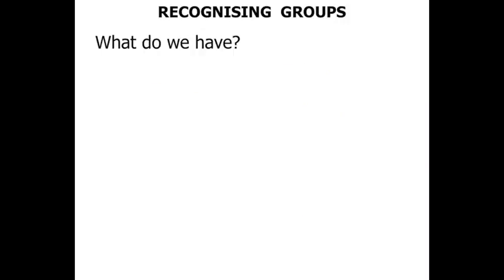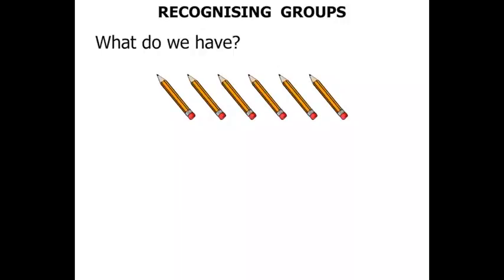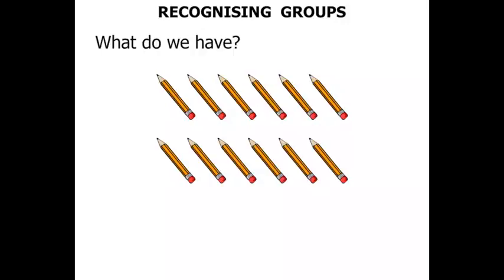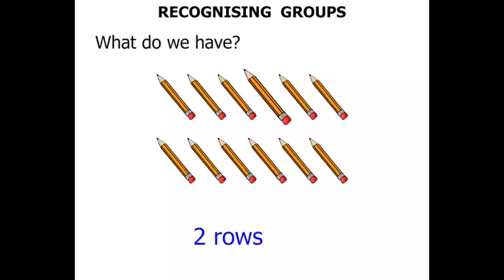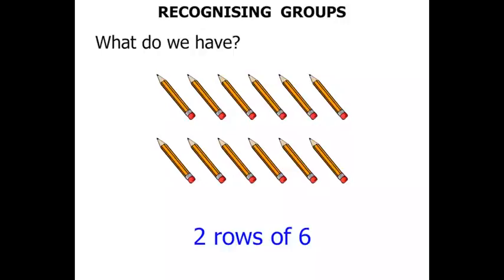What do we have? We've got some pencils there — one row. Another row of pencils, so certainly we've got two rows. But I wonder how many in each row. Let's just count the top row: one, two, three, four, five, six. We've got six pencils in each row. So we've got two rows of six. There were six in each row.